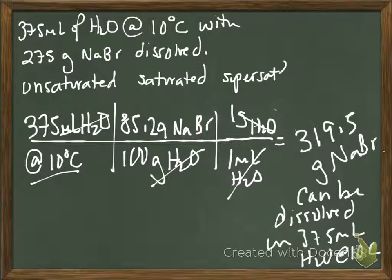What do you have for a raw answer? 319.5 grams of sodium bromide. That's how much sodium bromide we could potentially dissolve in that 375 milliliters of water. This is 319.5 grams of sodium bromide can be dissolved in 375 milliliters of water at 10 Celsius. Now we have a number we can compare to. Is this solution unsaturated, saturated, or supersaturated? We have 275 grams in there. It's unsaturated.